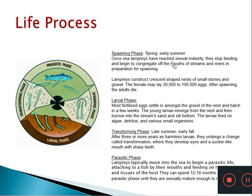During spring or early summer, sexually mature sea lampreys stop feeding and migrate to rivers and streams. At their spawning grounds they construct nests of small stones and gravel, laying 30,000 to 100,000 eggs. After spawning the adults die, which is why they are described as semelparous.